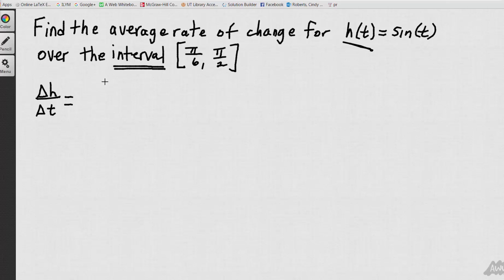And so I would find the sine of the larger - because remember when we do an interval, I pick the larger one first - pi over 2 minus the sine of pi over 6. And then the change in t, which is pi over 2 minus pi over 6.